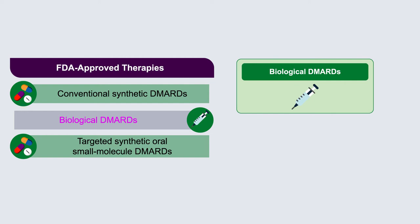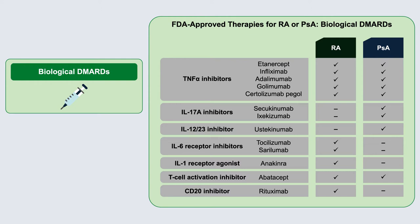Looking at the growing list of targeted therapies, we see TNF, IL-17s, IL-12/23s, IL-6, IL-1, and molecules targeting T cells and B cells. TNF inhibitors are used across these diseases, but IL-17s are heavily used in psoriasis and psoriatic arthritis. IL-6 receptor antagonists and IL-1 antagonists are RA-focused. Abatacept, a T-cell activation inhibitor, has indications in both. B-cell therapy is limited to rheumatoid arthritis with very soft evidence of efficacy in psoriatic arthritis.